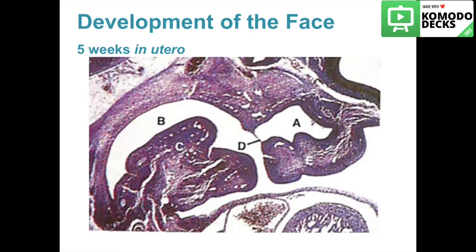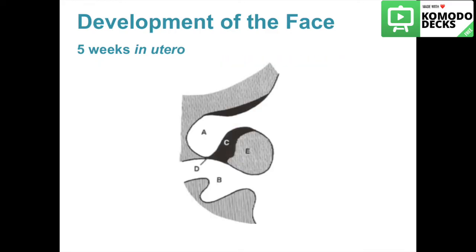In A we can see the nasal cavity, B is the oral cavity, and C is the developing tongue. D is the oronasal membrane, which separates the oral and nasal cavities. E is the maxillary isthmus between the two maxillary processes. The oronasal membrane would rupture at week five. The nasal fins are labeled C, and when the oronasal membrane ruptures at the end of the fifth week, the oral and nasal cavities come into open communication. E is the maxillary isthmus — a bridge of epithelial tissue.